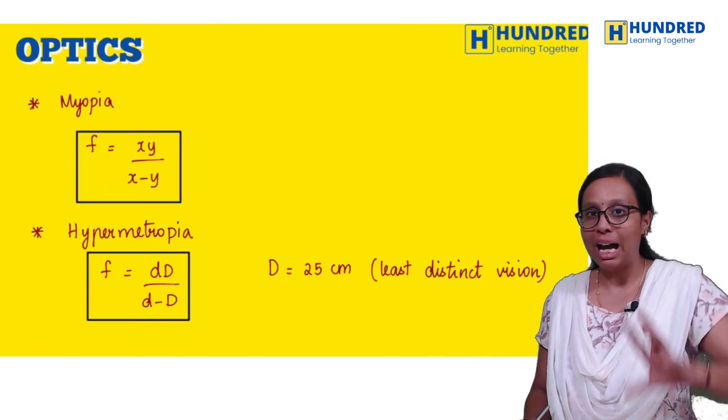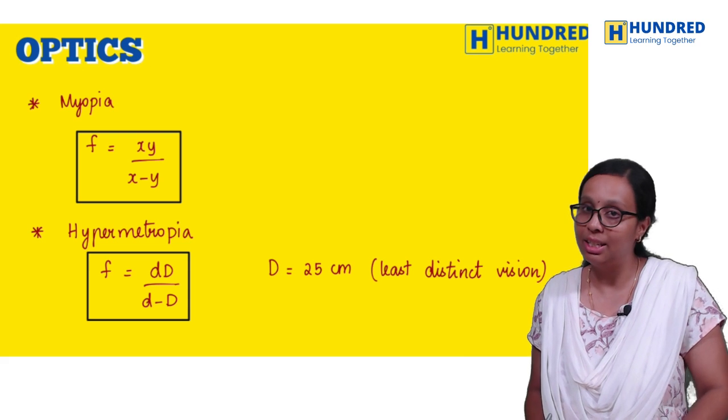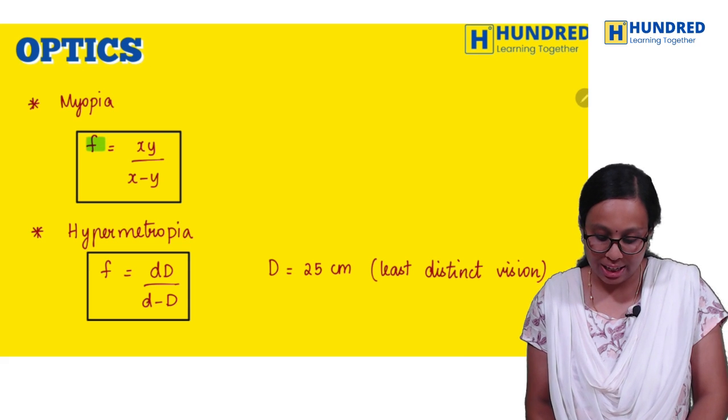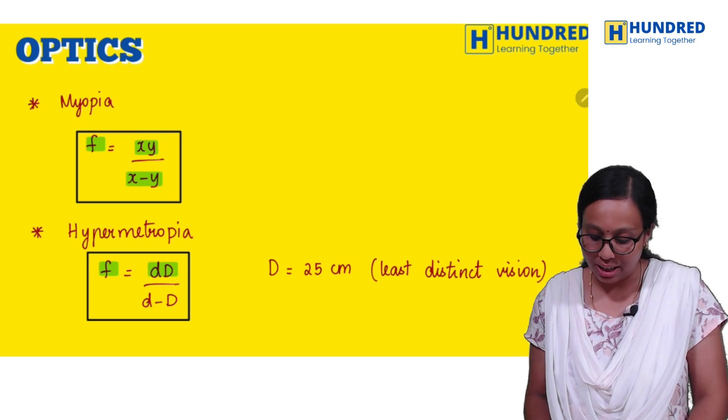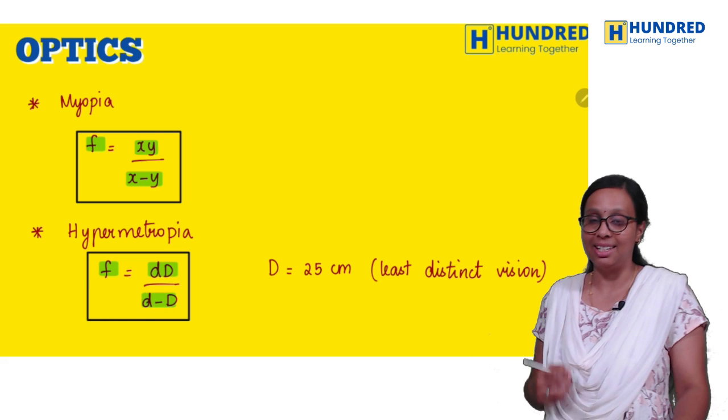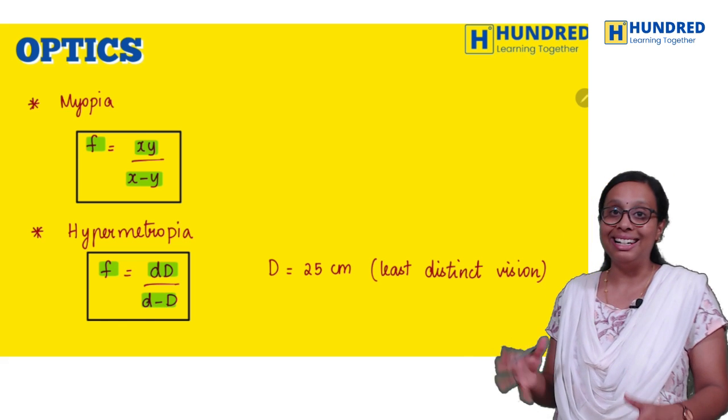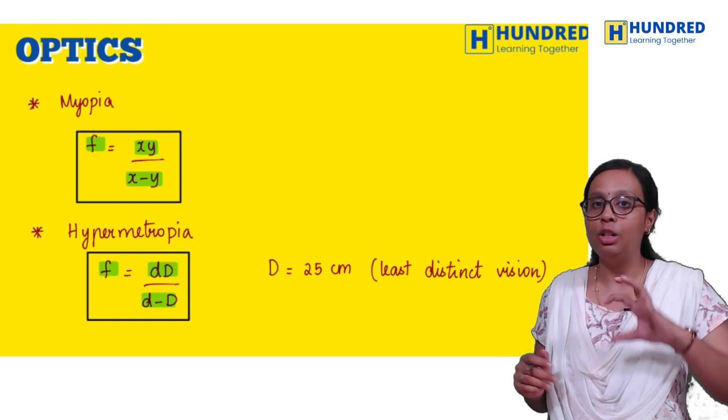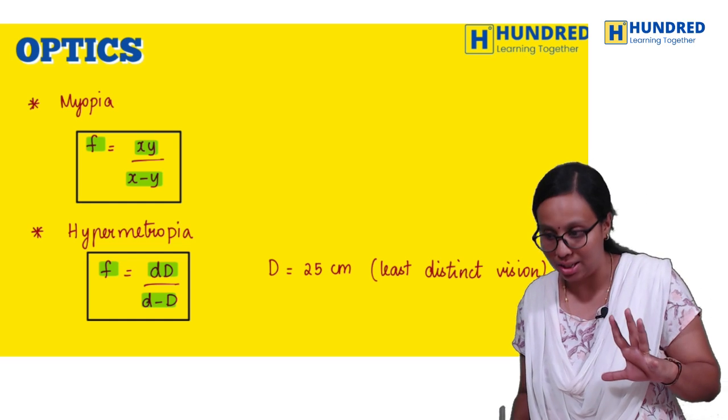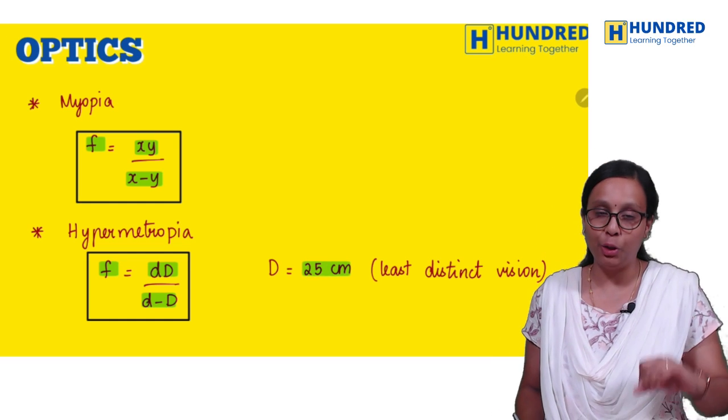And then myopia, hypermetropia based questions from model question paper. Focal length equals xy by x minus y. For hypermetropia, D minus d minus d, where capital D is least distance of distinct vision. That is normal for normal human beings, 25 cm. So this is the value for that question.